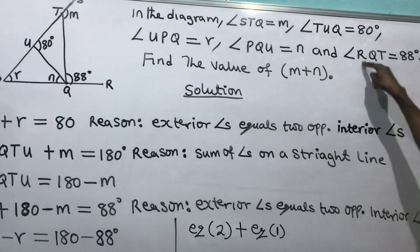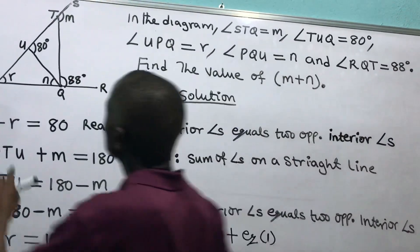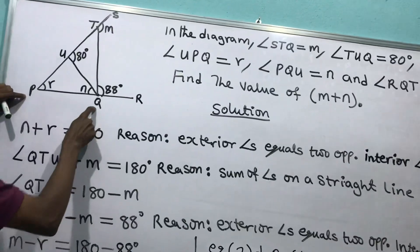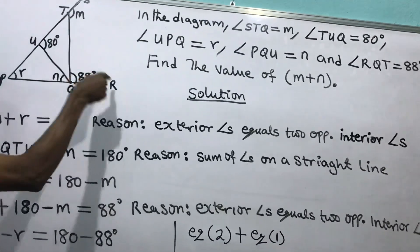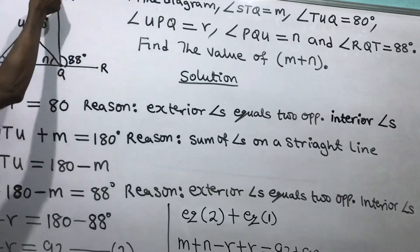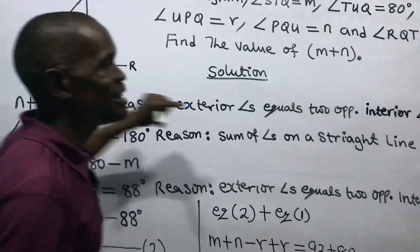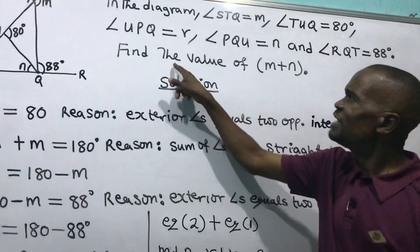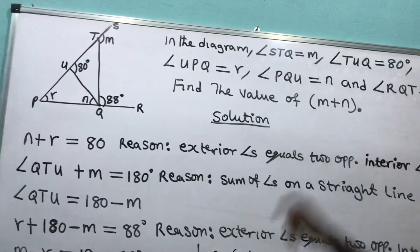Angle R-Q-T — look at R-Q-T. That's the angle. It's H. Then I say: find the value of M plus N.